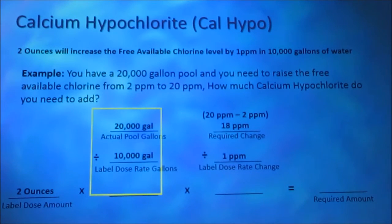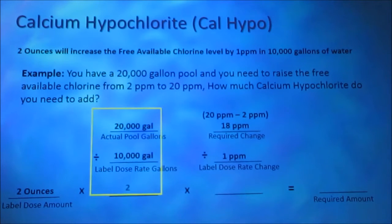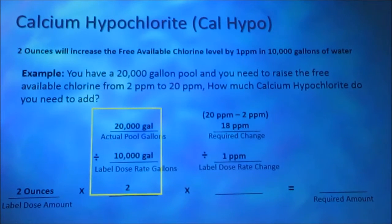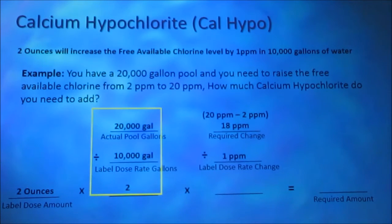We divide our actual pool gallons by our label dose rate gallons. 20,000 gallons divided by 10,000 gallons is 2. We have 10,000 gallons of water 2 times. To get a 1 part per million increase in a 20,000 gallon pool, we would need to add 2 ounces of calcium hypochlorite 2 times.